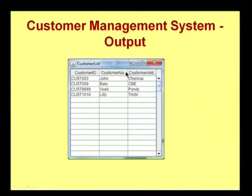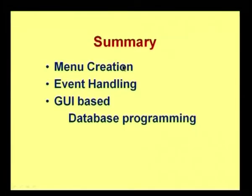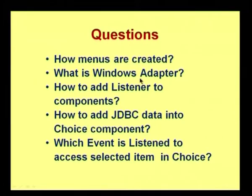In the output you can see add, edit, and view all — the newly added option. The customer management system output shows customer ID, name, and address loaded on a scroll pane within the list frame. As a summary, in today's session we discussed how to design and develop an application using menus, how to incorporate event handling mechanism, and how to have a GUI-based program involving database connectivity. In forthcoming sessions we will see how object-oriented concepts are implemented in Java, how to write Java programs with and without OOP concepts, and how to package a Java application. Thank you.